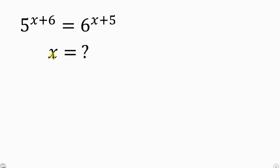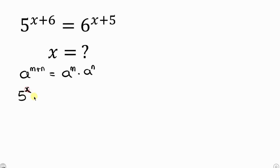Our first step towards solving this question is to apply the law of indices, which says that whenever I have a base raised to the power of m plus n, this can be written as a to the power m times a to the power n. We're going to apply this law to both expressions. So the left side becomes 5 to the power of x times 5 to the power of 6, equal to 6 to the power of x times 6 to the power of 5.